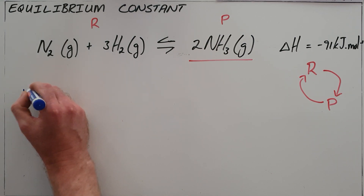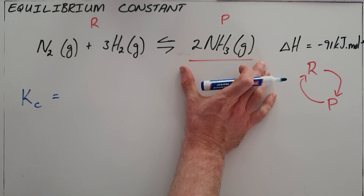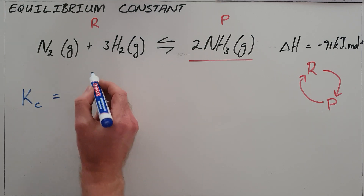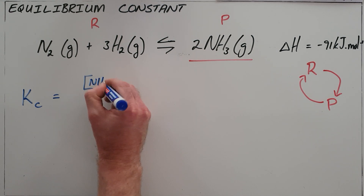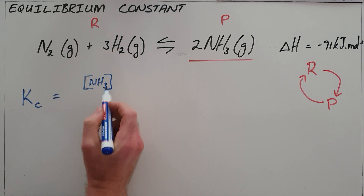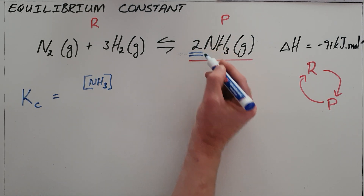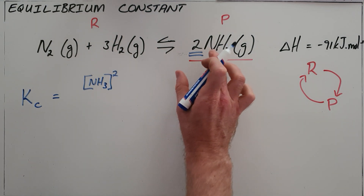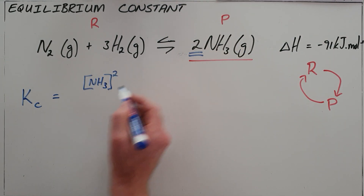What Kc tells us is essentially the ratio in which our products are present to the ratio in which our reactants are present. This is done using concentration — we know that writing something in square brackets refers to the concentration. So this means the concentration of ammonia to the power of its exponent, because there are two ammonia molecules produced, which means ammonia times ammonia.